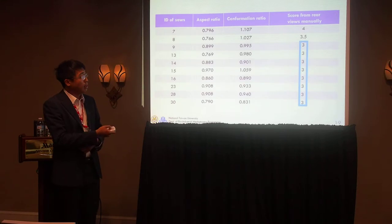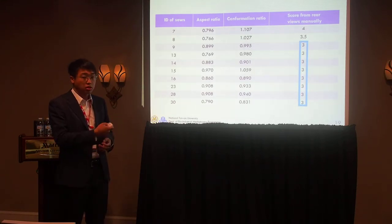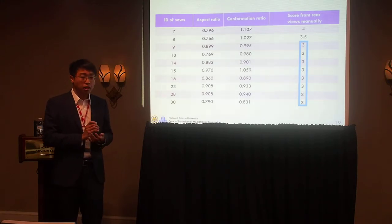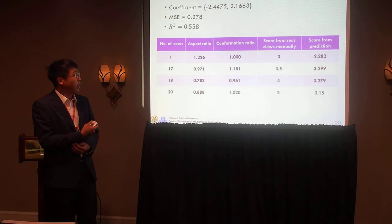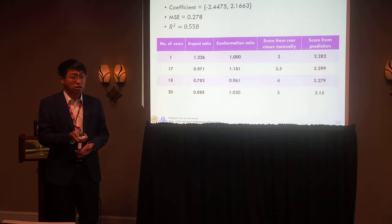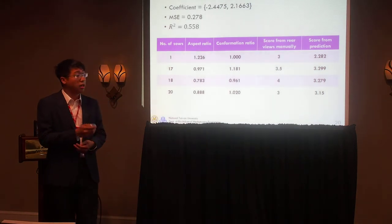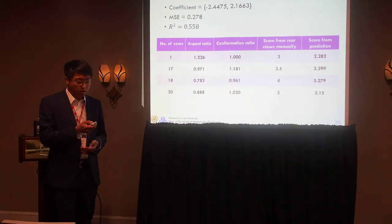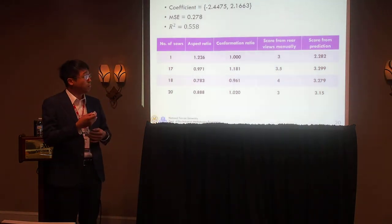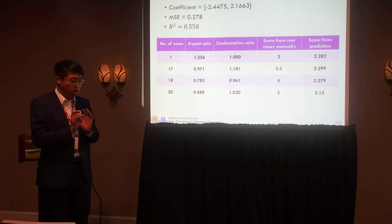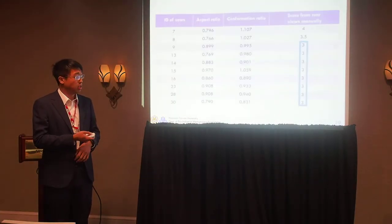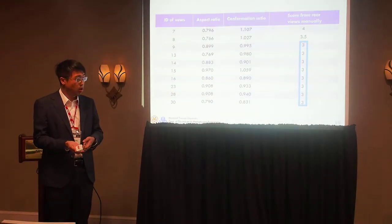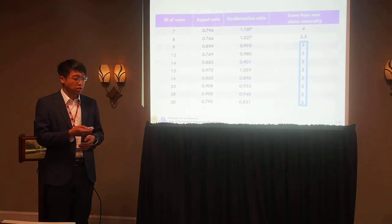But there is a problem. The scores from real field manual labeling are mostly 3, which may cause the prediction to not work well. From the linear regression, the coefficient of the aspect ratio and the conformation ratio are approximately -2.4 and 2.2 respectively. The mean squared error is 0.278 and the R-squared is 0.558. The mean squared error is not low enough and the R-squared is not high enough. I think the probable reason is that the data is mostly scored as 3, so it cannot predict all scores precisely.